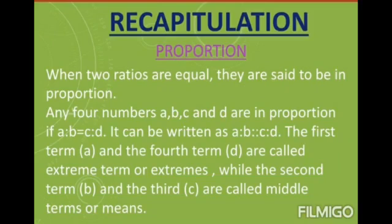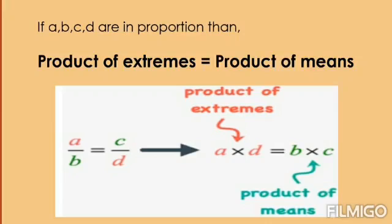The next topic is proportion. When two ratios are equal, they are said to be in proportion. Any four numbers A, B, C and D are in proportion if A:B = C:D, written as A:B :: C:D. The first term A and the fourth term D are called extreme terms or extremes, while the second term B and the third term C are called middle terms or means. If A, B, C and D are in proportion, then the product of extremes always equals the product of means: A × D = B × C.